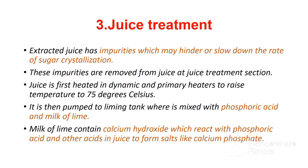The third stage of sugar cane processing is juice treatment. Extracted juice has impurities which may hinder or slow down the rate of sugar crystallization. These impurities are removed from juice at the juice treatment section. Juice is first heated in dynamic and primary heaters to raise the temperature to 75 degrees Celsius.